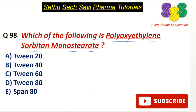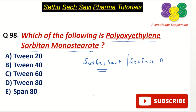From these choices, first you need to understand what kind of compounds tweens and spans are. Basically they are surfactant compounds. Surfactants are also called as surface active agents.